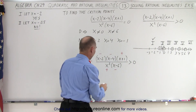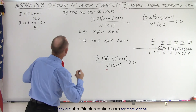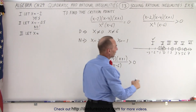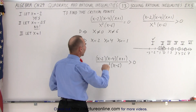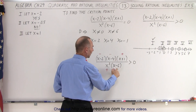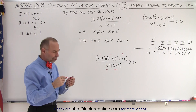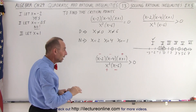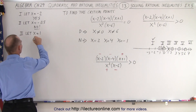Now let's check region number three with x equals one. One minus two is negative one — negative. One minus four is negative three — negative. One plus one is two — positive. The x-squared term is always positive. One minus six is negative. That gives three negatives, an odd number, so the fraction is negative. Normally we'd expect an alternating yes-no pattern, but here we see two regions in a row that do not satisfy the inequality. Region number three is also a no.